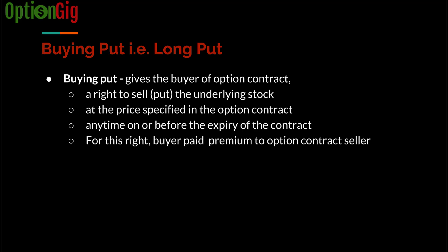Let's cover long put, which is also known as buying a put. What does buying a put or a long put give the buyer of an option contract? This gives the buyer a right to put or to sell the underlying stock. If you buy a put option, you are buying the right to put the stock — that is, to sell the stock to an option contract seller — but at a price specified in the option contract, which is called the strike price.